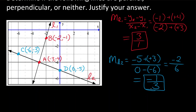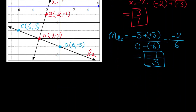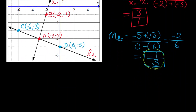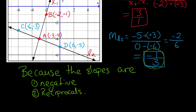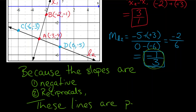We now have our slopes: the slope of line one is three over one, and the slope of line two is negative one over three. That sure looks like they're negative reciprocals — one is negative and they're reciprocals of each other. So because the slopes are negative reciprocals, these lines are perpendicular.